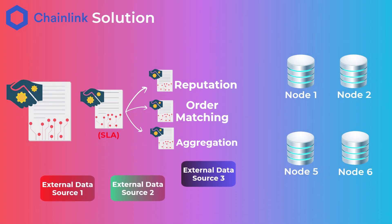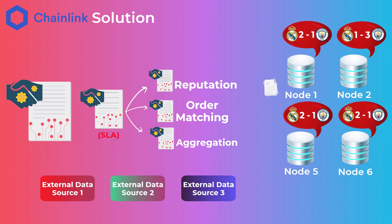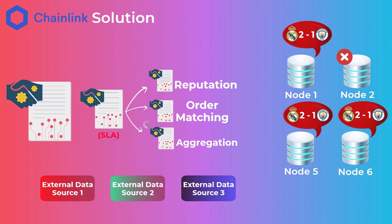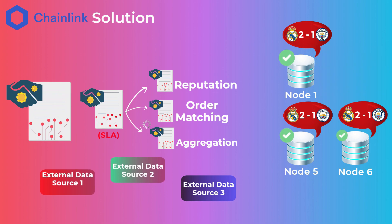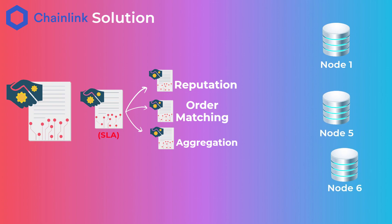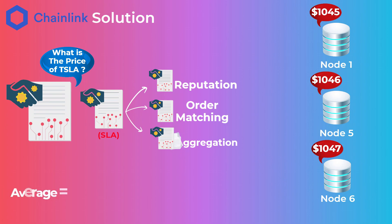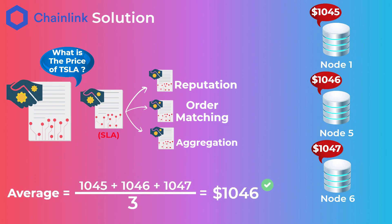The chosen nodes gather the requested data from their external data sources and send the results to the aggregation contract. The aggregation contract checks all received data and eliminates wrong results. For example, if four nodes were chosen and three sent the same result but one sent a different result, the wrong result is eliminated and the aggregation contract approves the result from the three correct nodes. It can also take an average — for instance, if the requested data was the price of Tesla stock and the nodes sent three close but different values, the aggregation contract averages them and approves that as the correct data.